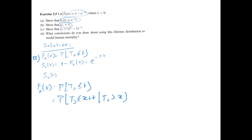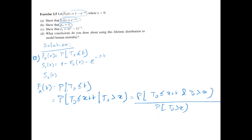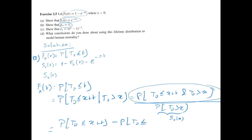We can write this conditional probability as follows: it's the probability that t0 is less than or equal to x plus t and t0 exceeds x, divided by the probability that t0 is bigger than x. This probability is s0(x), and we can write the numerator as the probability that t0 is less than or equal to x plus t minus the probability that t0 is less than or equal to x, all divided by s0(x).